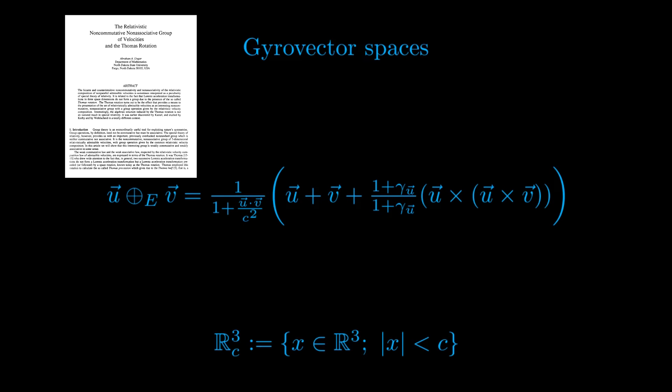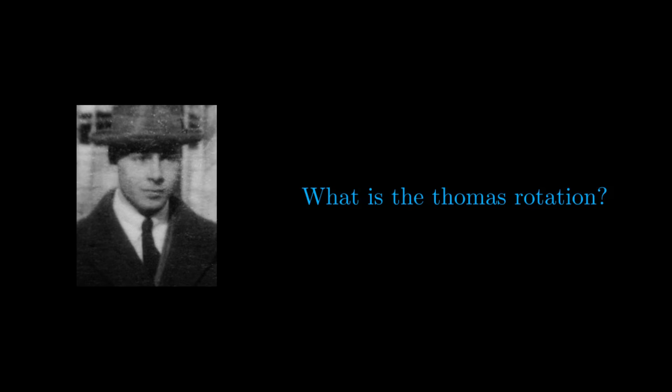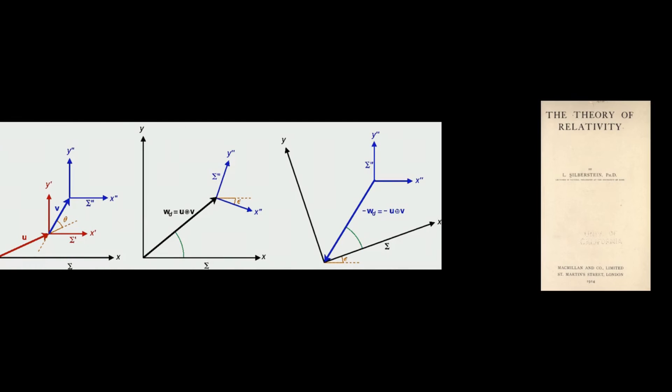Ungar, in his paper, The Relativistic Non-Commutative Non-Associative Group of Velocities and the Thomas Rotation, exposed how the previously cited operation satisfies a weak commutative and weak associative law, and he expressed them in terms of the Thomas Rotation. But what is a Thomas Rotation? Both of these concepts are named after the physicist Llewellyn Thomas, who noticed that, in general, two successive Lorentz boost transformations do not form a Lorentz boost transformation, but rather a Lorentz boost transformation preceded or followed by a space rotation. The latter is now commonly known with the name of Thomas Rotation. This fact was also noticed independently by the Polish physicist Ludwig Silberstein in his 1914 textbook The Theory of Relativity.